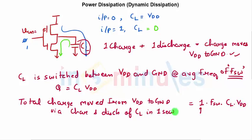So this was for one second. If I assume for time t this will change to T times F_SW times C_L times V_DD. So here we could easily see that the total charge moved from V_DD to ground via charging and discharging of C_L in one second was nothing but one times F_SW times C_L times V_DD. Similarly we can say that if it's time t it's going to be nothing but t times F_SW times C_L times V_DD.